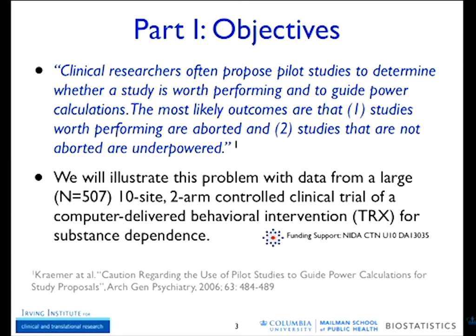In this first part, I will illustrate that with an example using real data from a large 507-subject clinical trial. This trial was performed in a CTN under the NIDA network. It had 10 carefully selected sites and two arms: one was a computer-delivered behavioral intervention, the other was treatment as usual. It was for substance abuse, and the outcome was being abstinent from substance abuse.